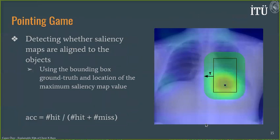As a quantitative measure, we use pointing gain to assess whether the saliency maps are aligned to the foreign objects. We calculate the distance between a bounding box and the maximum location of the saliency map to see whether that distance is within a tolerance range. If the maximum saliency map value is close to one of the bounding boxes within an offset, we consider it a hit, as shown in the figure on the right; otherwise, it is declared a miss. We calculate accuracy by dividing the number of hits by the number of images.